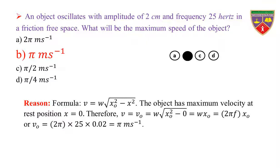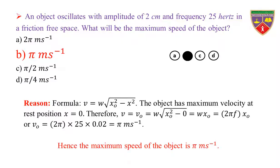Reason: formula V = ω × √(x₀² − x²). The object has maximum velocity at the rest position, where x = 0. Therefore, V_max = ω·x₀ = 2πf·x₀. So, V_max = 2π × 25 × 0.02, where 25 is the frequency and 0.02 m is the amplitude. This equals π m/s. Hence, the maximum speed of the object is π m/s.